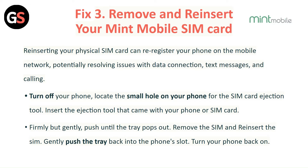Fix 3: Remove and reinsert your Mint Mobile SIM card. Reinserting your physical SIM card can re-register your phone on the mobile network, potentially resolving issues with data connection, text messages, and calling. Turn off your phone, locate the small SIM card ejection hole, insert the ejection tool and gently push until the tray pops out. Remove the SIM, reinsert it, push the tray back in, then turn your phone back on.